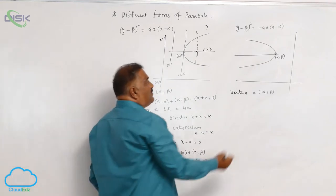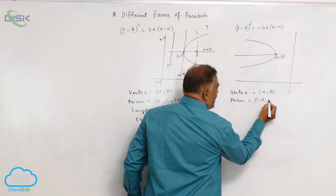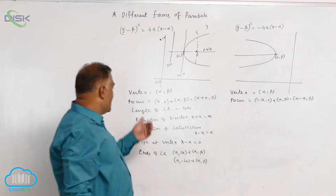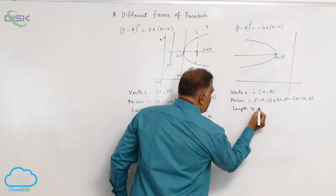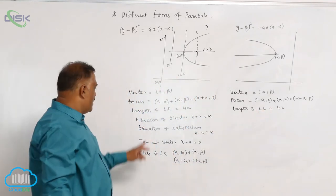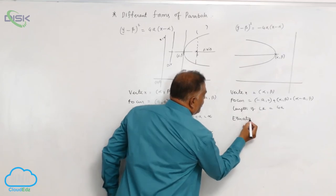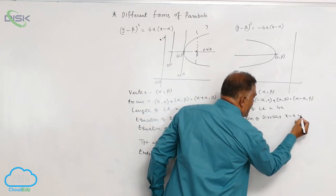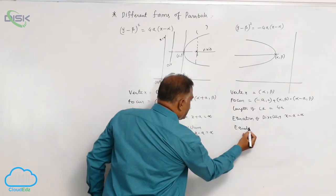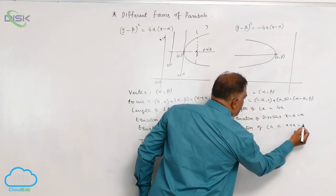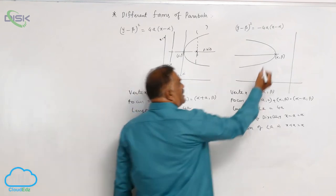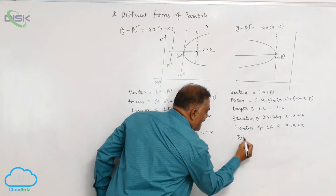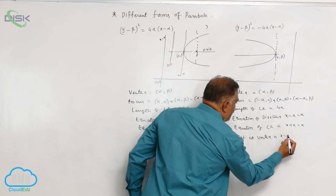Then comes focus. Previously, focus is (−a, 0). Now, it is plus (α, β). This will become (α − a, β). Then comes length of latus rectum — it will always be equal to 4a units. Then comes equation of directrix. Previously it is x minus a = 0, now it is x minus a = α. Then comes equation of latus rectum, given by x + a = α. Then comes tangent at vertex — it is parallel to the y-axis, so tangent at vertex is x minus α = 0.